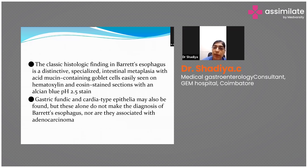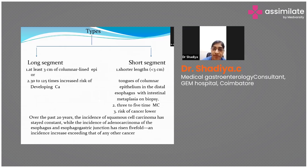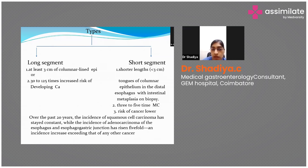The classic histological finding in Barrett's esophagus is distinctive specialized intestinal metaplasia with acid mucin-containing goblet cells, which stain with Alcian blue. It can be long segment or short segment. Short segment means the length is less than three centimeters and the risk of conversion into cancer is very low, whereas long segment means more than three centimeters in length and there is a 30 to 125 times increased risk of developing into a carcinoma.